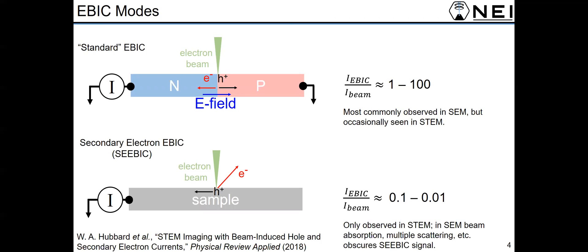More recently we've demonstrated SEEBIC, or secondary electron emission EBIC, which is an entirely different contrast mode which measures the holes left behind when the electron beam ejects secondary electrons from the sample.